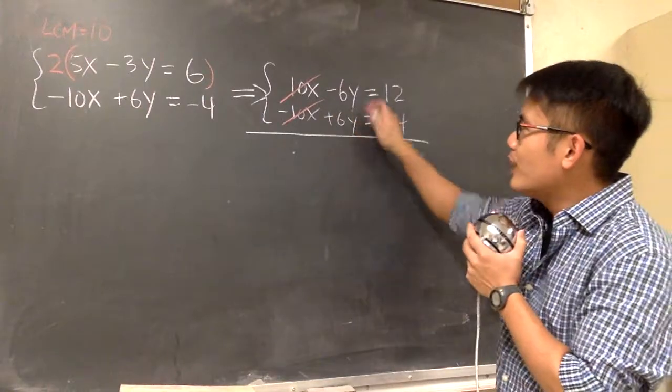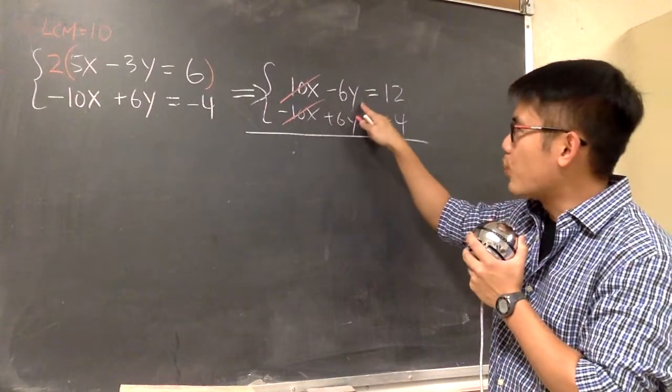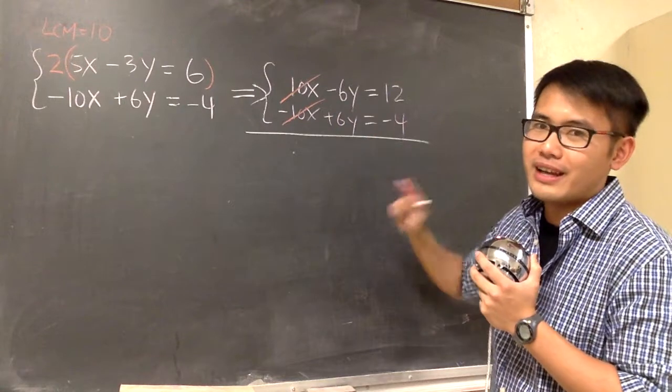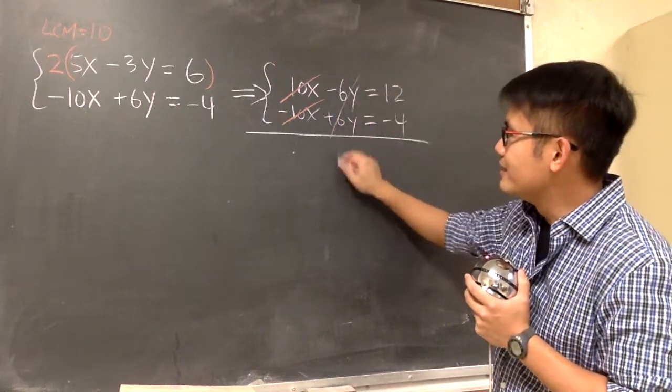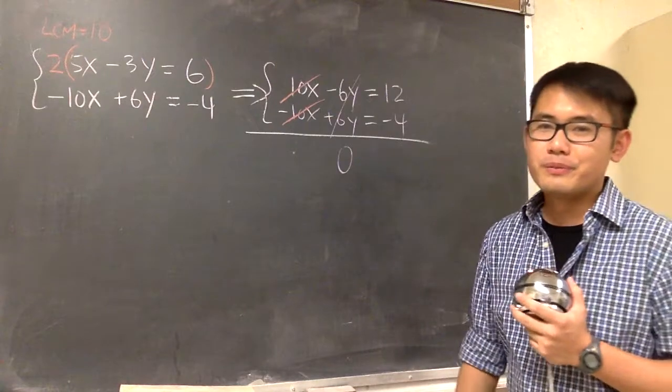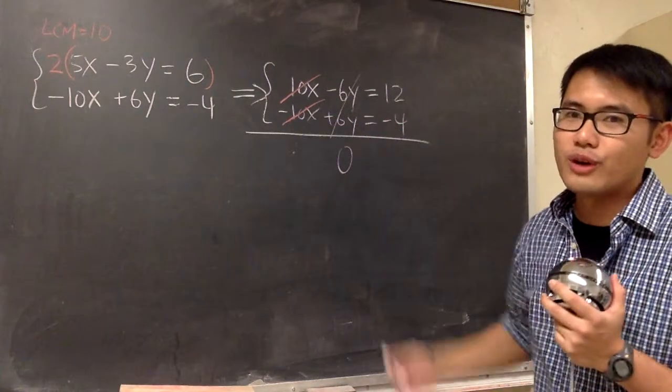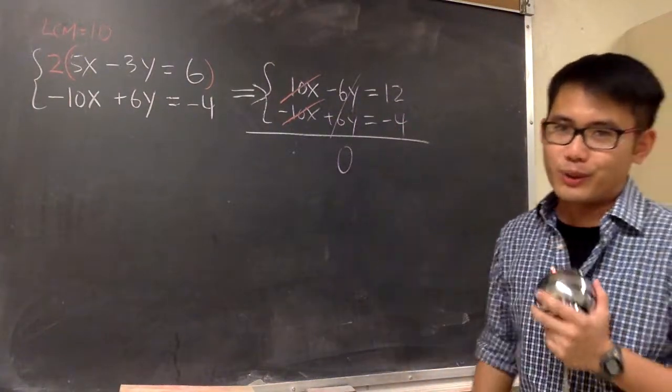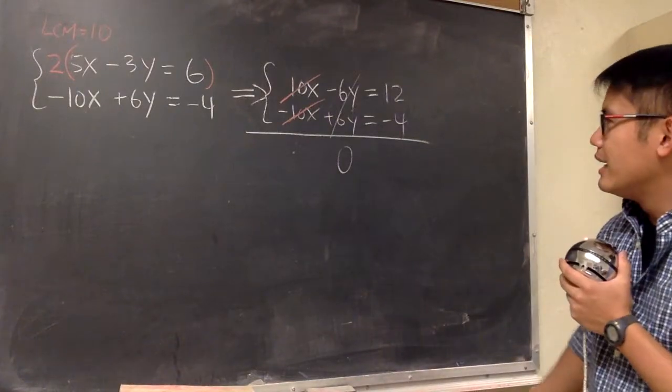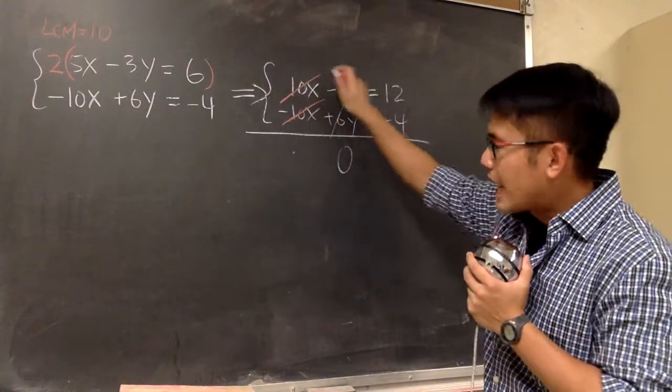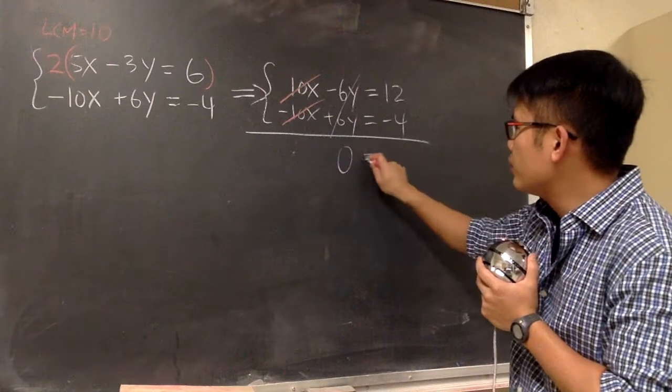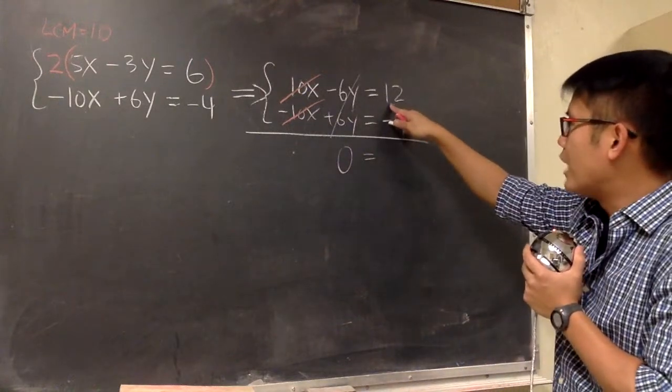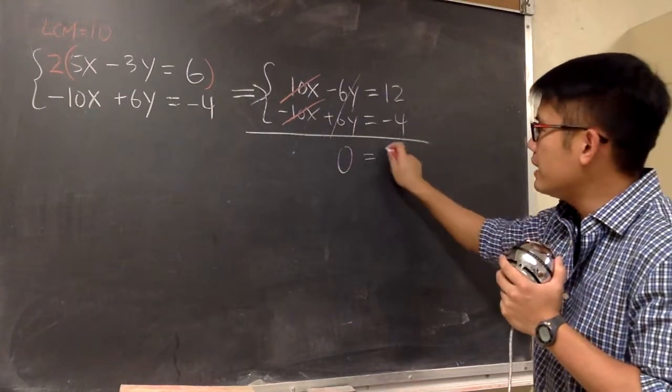However, right here, we have what? We have negative 6y plus 6y. This becomes what? This is also 0, isn't it? Well, it's not my fault that I got rid of the y also. It just happened to be this way. Don't get mad at me. Anyways, so the entire left-hand side becomes just a 0. And this is equal to, here we have 12 minus 4, which is 8.